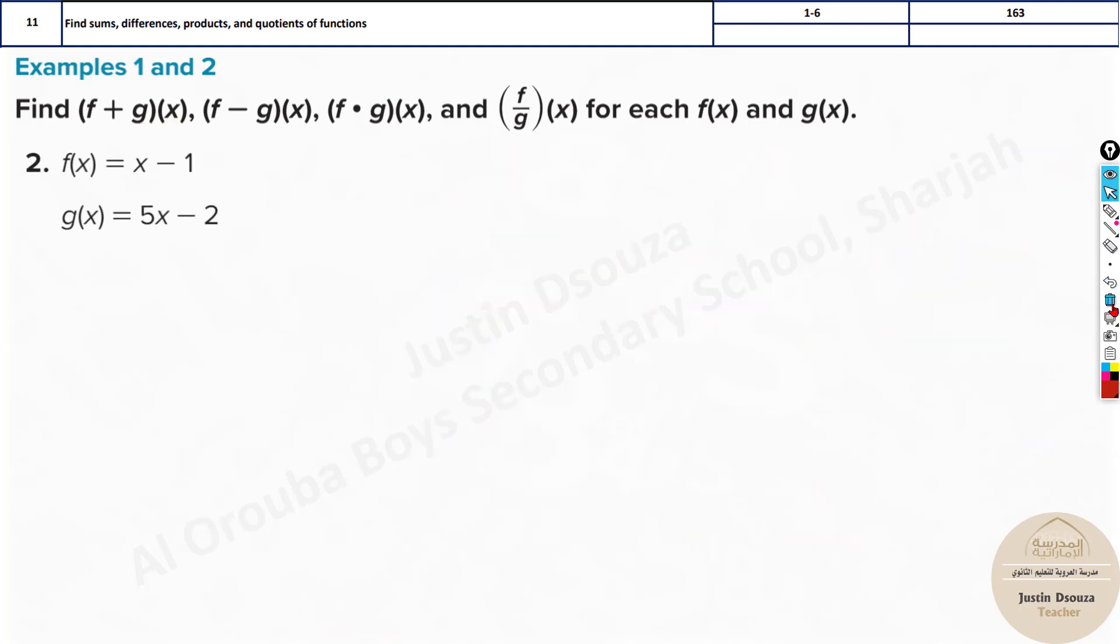Same thing over here. I just do the last division part. Over here it will be x minus 1 divided by 5x minus 2. Here you should just equate 5x minus 2 equals 0. And solve. 5x equals 2, x equals 2 by 5. This is the excluded value. x cannot be equal to 2 by 5. I just put equal to and solve.